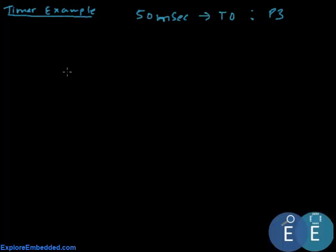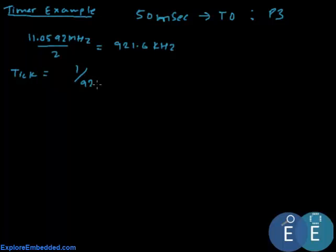Basically, we recall from the last video that the timer frequency would be the crystal frequency divided by 12. Assuming we have 11.0592 MHz divided by 12, this comes up to 921.6 kHz. This is the frequency that the timer gets. Now, the timer tick, each timer tick, equals 1 divided by this frequency. So every time the counter ticks, it takes a time of 1.085 microseconds.